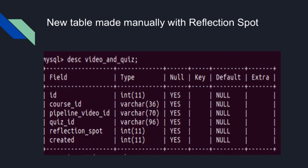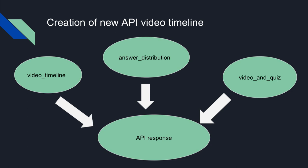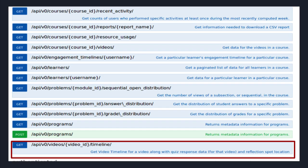We created a new table manually with columns: reflection spot segment, Course ID, Pipeline ID, and Quiz IDs. The API response pulls from three separate tables: the video timeline table (video information), the answer distribution table (quiz responses), and our new video-and-quiz table (reflection spot information).